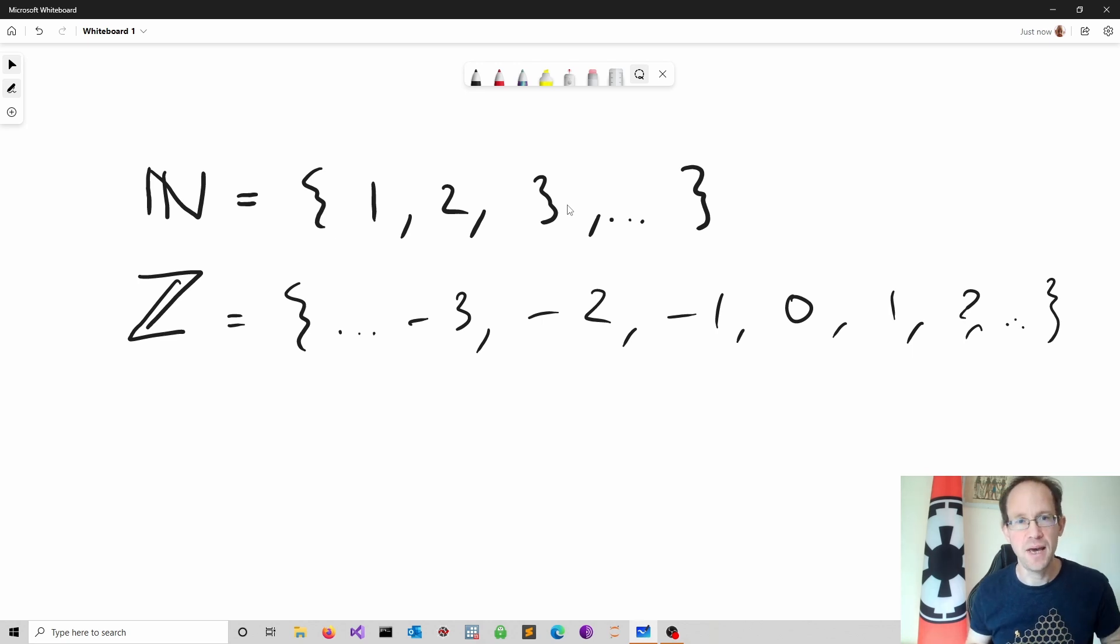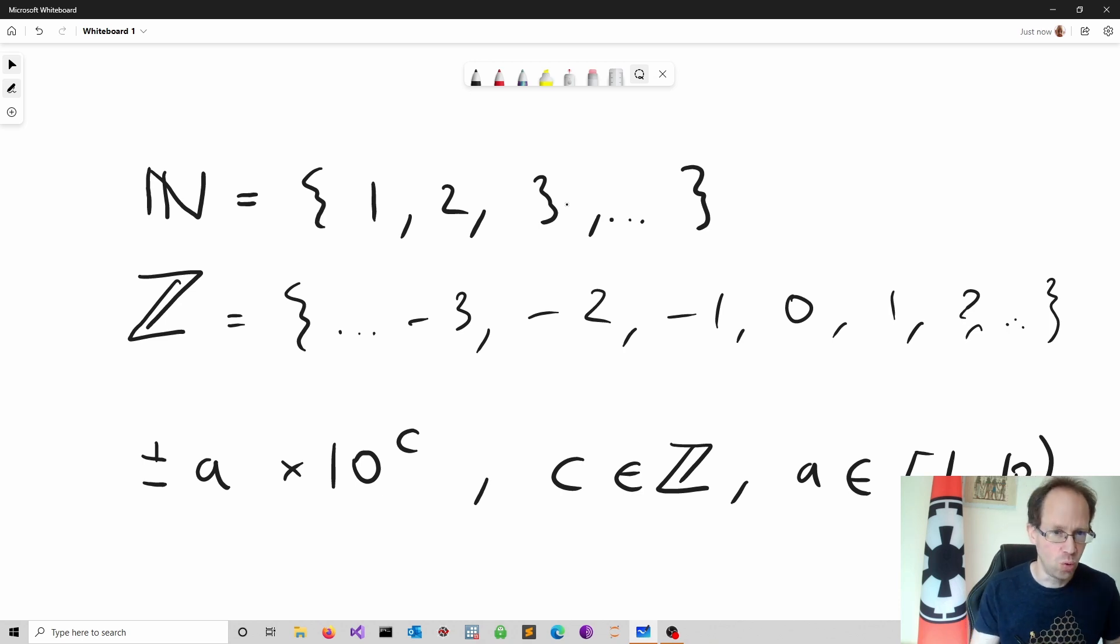Relative accuracy matters when we use scientific notation defined as follows. Note the use of the half-open interval, indicating that 10 is excluded and 1 is included. For instance, reporting 1.82 times 10 to the power of minus 3 refers to three significant figures.